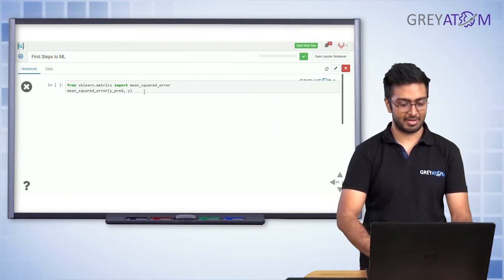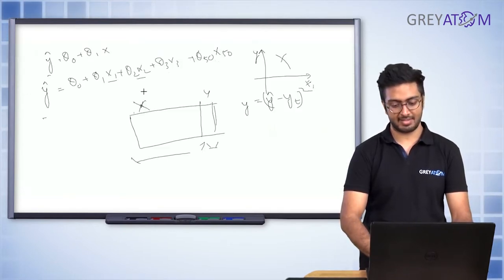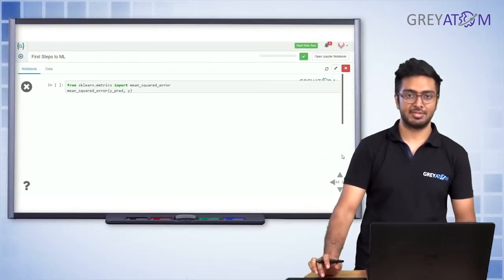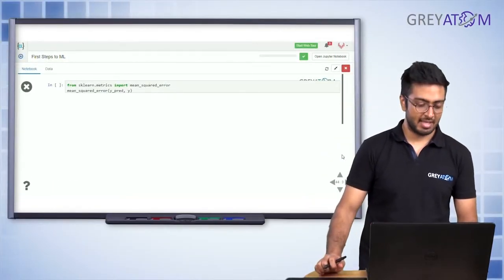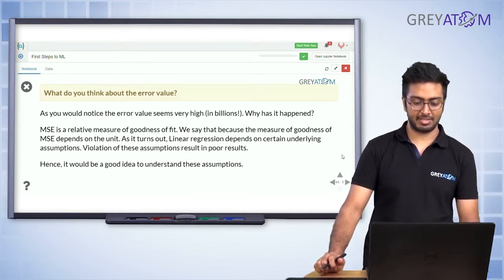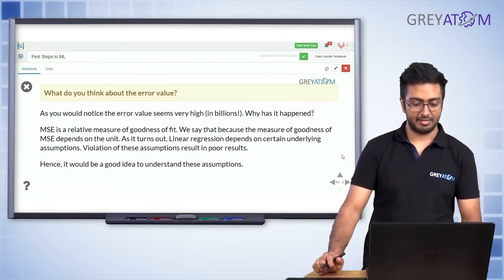The squared error for each data point is computed, then all squared errors are summed and divided by the total number of data points to get the mean squared error. That metric tells us how well our model is performing.